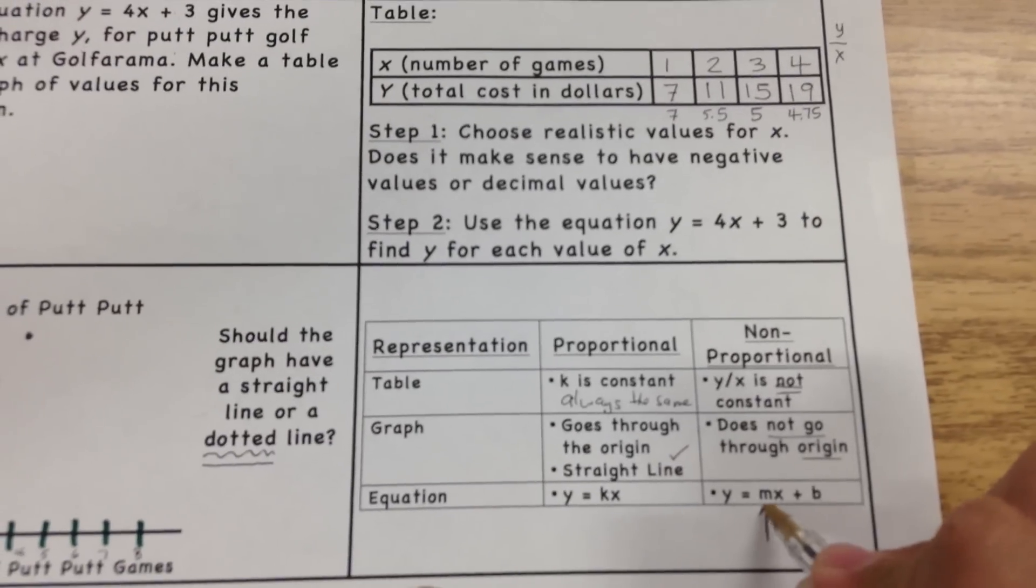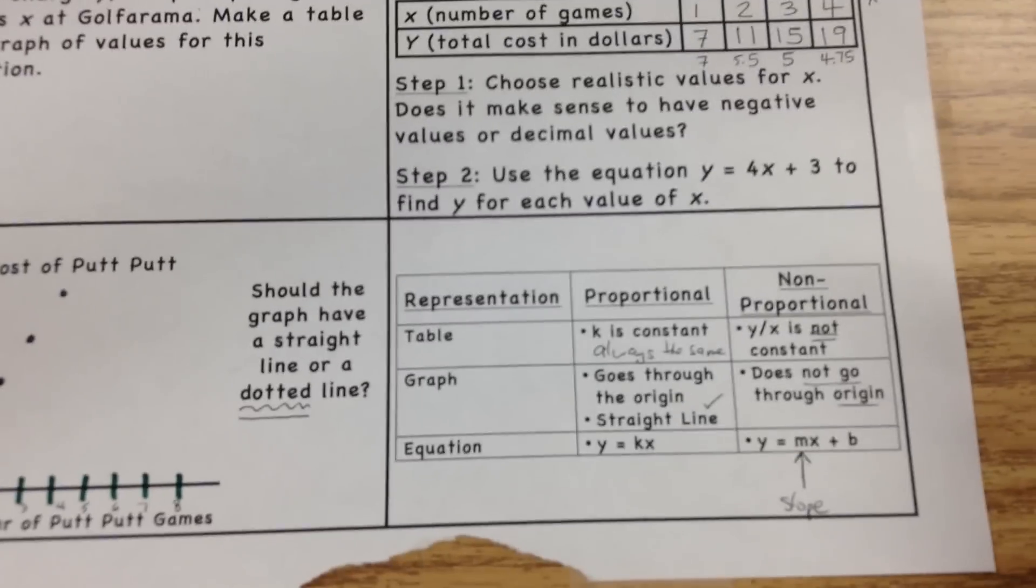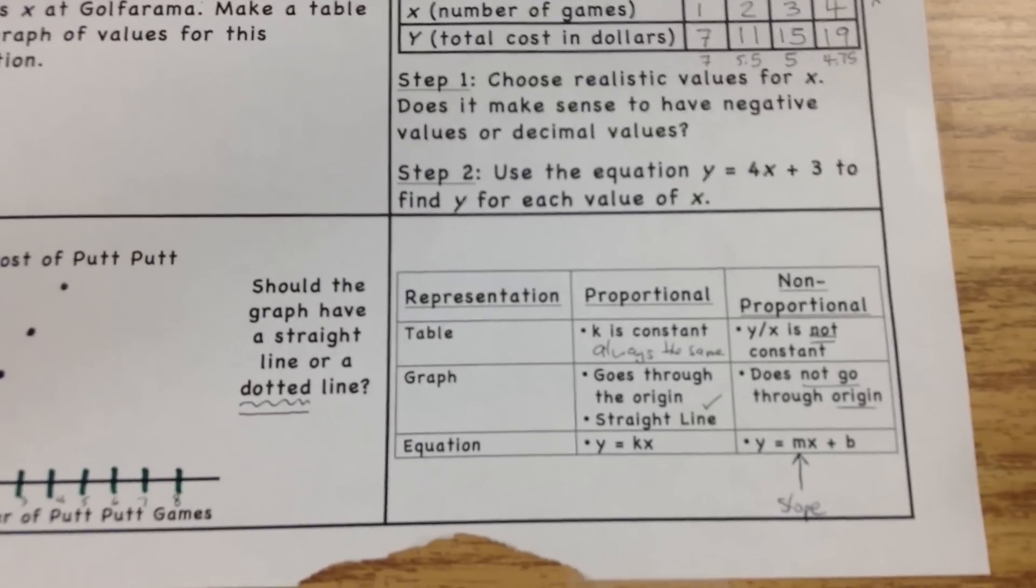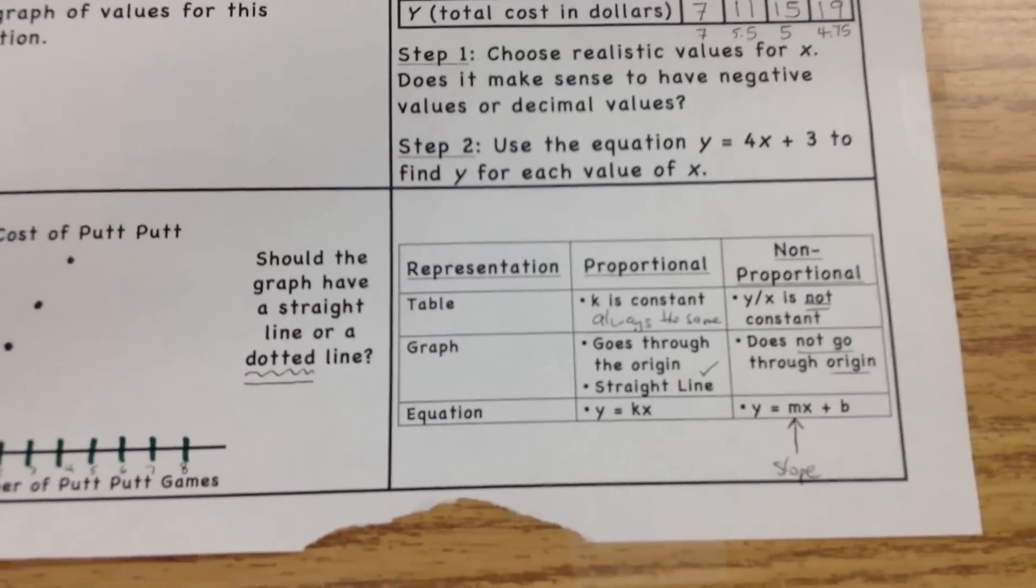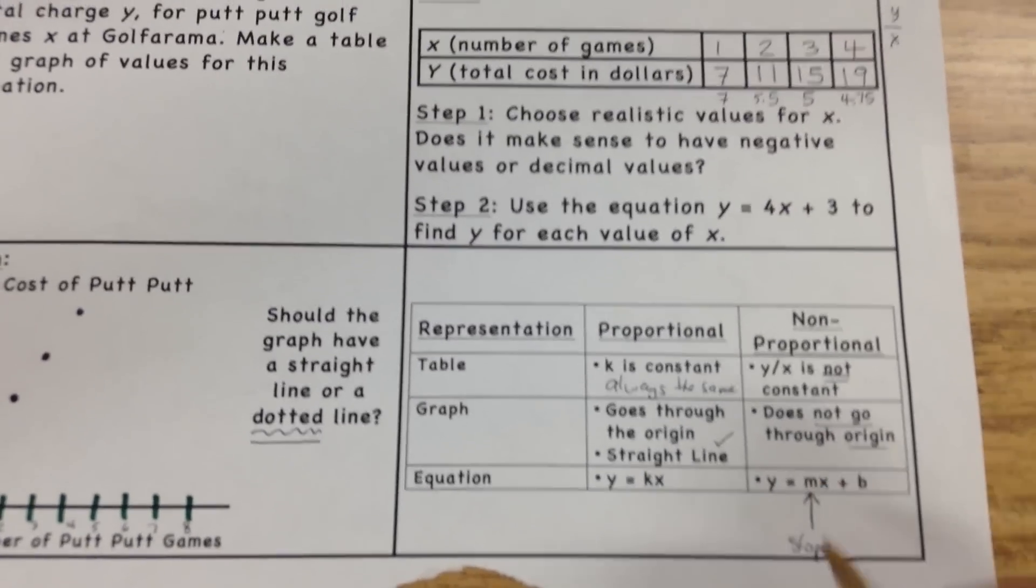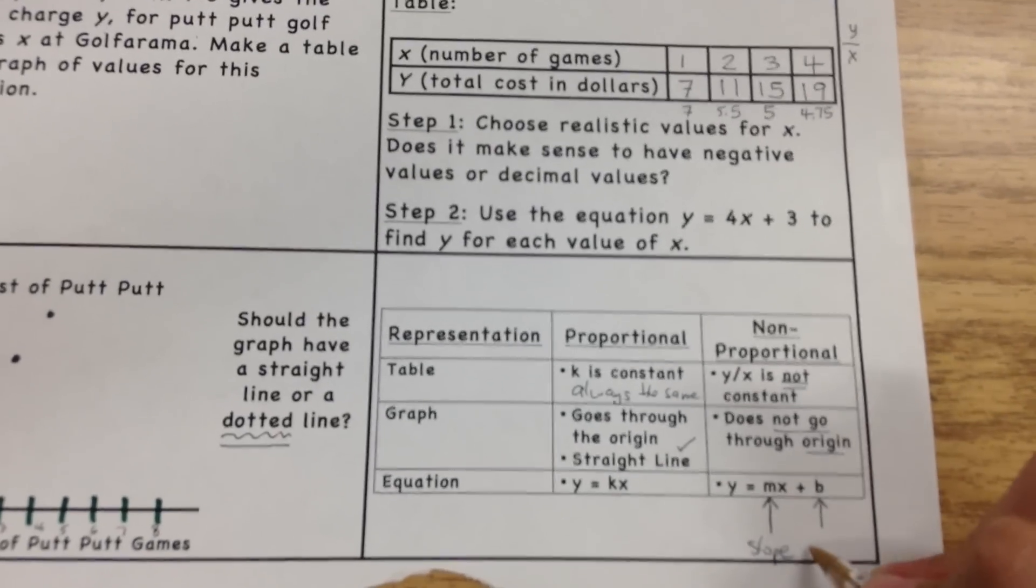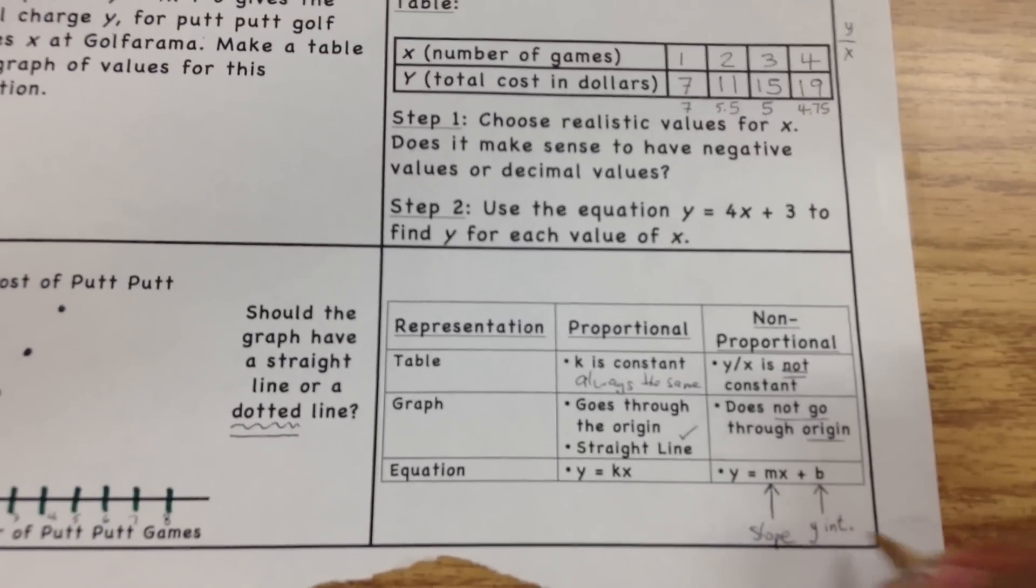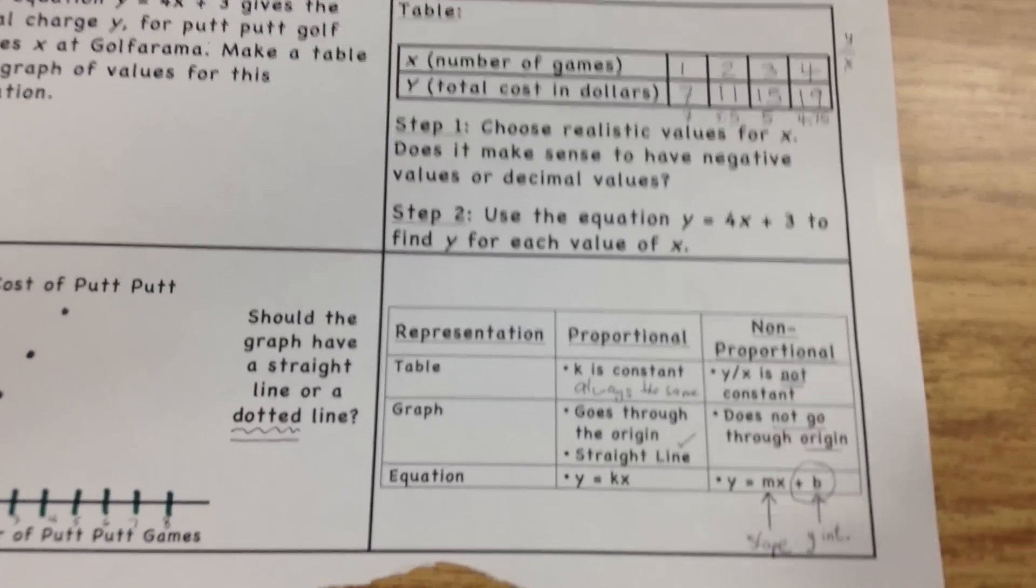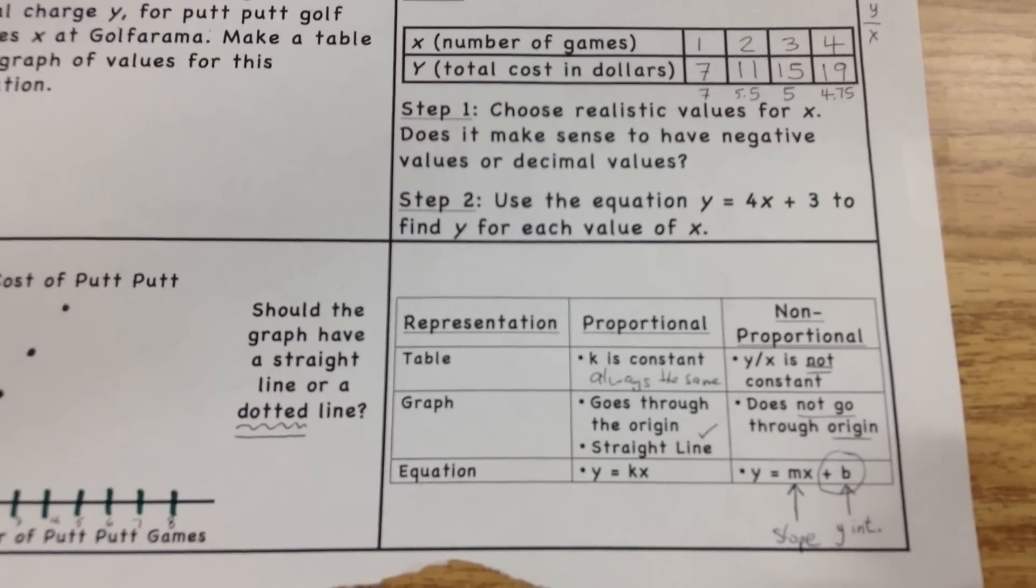We're going to start calling our slope by this letter right here, the letter M. Now, I have no clue why they chose the letter M for slope. It doesn't make a whole lot of sense. There's not even an M in the word slope. The S is taken maybe for side or something like that. So we're going to start having to think of the slope as the letter M. And we're going to start calling this B right here, this letter, our y-intercept. When we have a line that actually goes through the y-axis, this number, whatever this number is after the x part, that's where it's going to go through the y-axis.